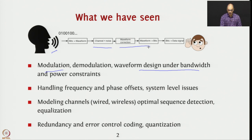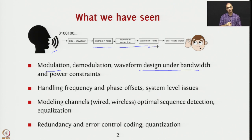Then, once we get the bits, how do we make sure the bits are correct? We added redundancy — enough redundancy so that even after the channel effects and equalization, you can still deal with further problems. In that context we added redundancy in terms of error control codes, and we managed to correct some errors.